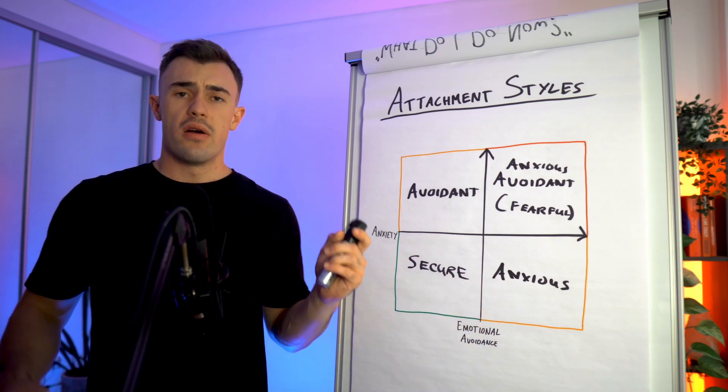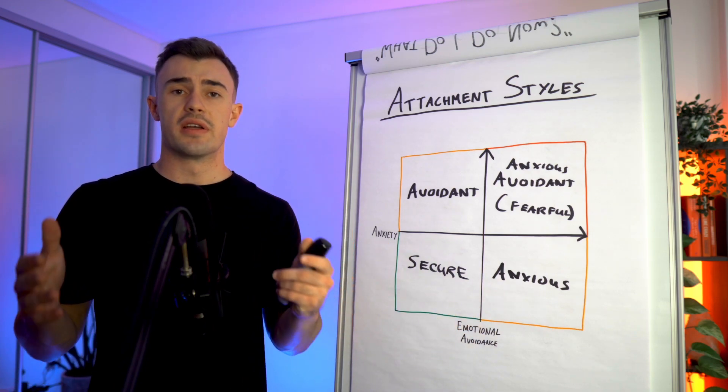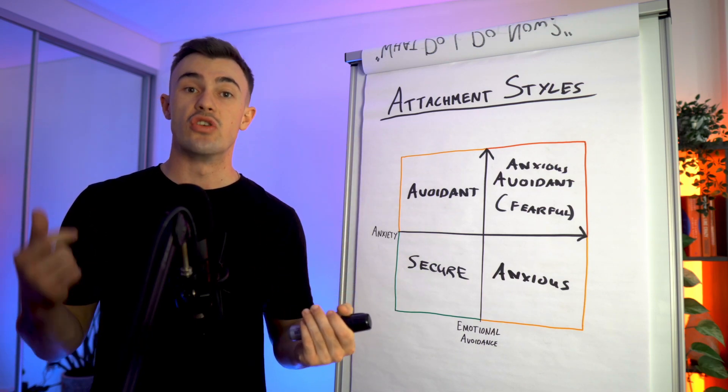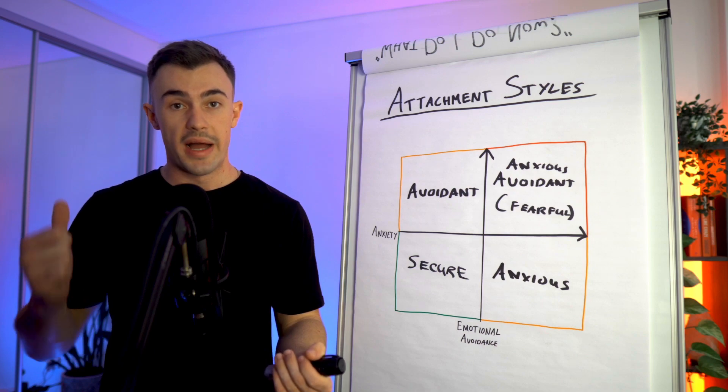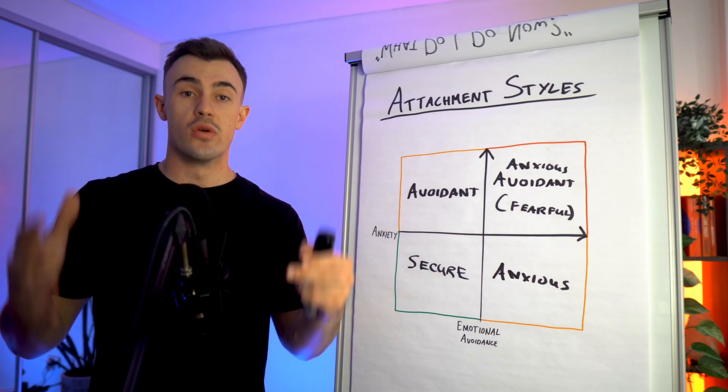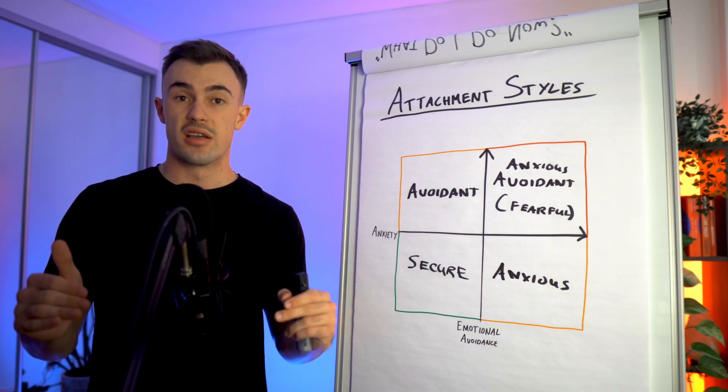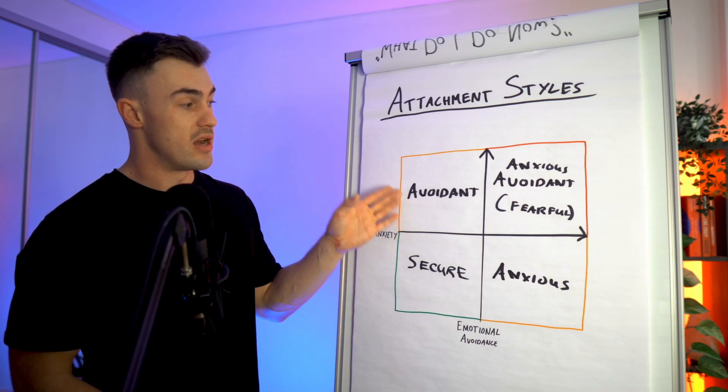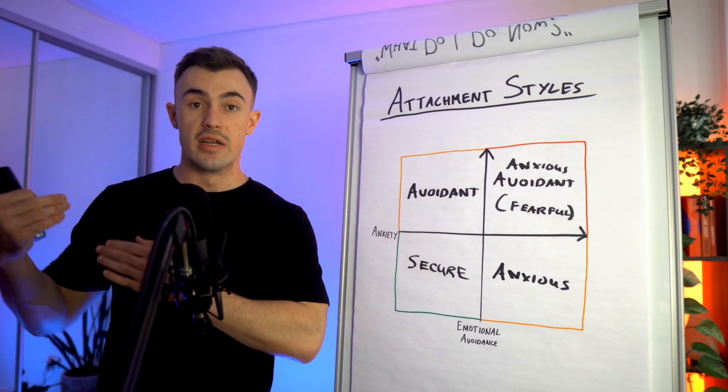Now, if you are an avoidant type, a lot of this is going to come down to becoming aware of the fact that you have this avoidant attachment style and that you do have a tendency to pull back and run away when things do get close and to shut down when arguments arise because you don't know how to deal with the emotional side of it.